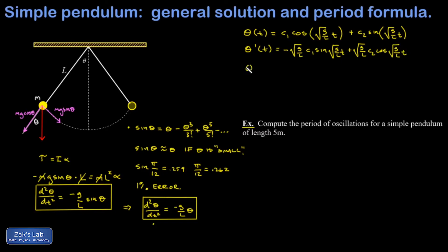Now I differentiate again. And the chain rule produces another factor of root g over L. And when I multiply those two factors, I just get g over L.